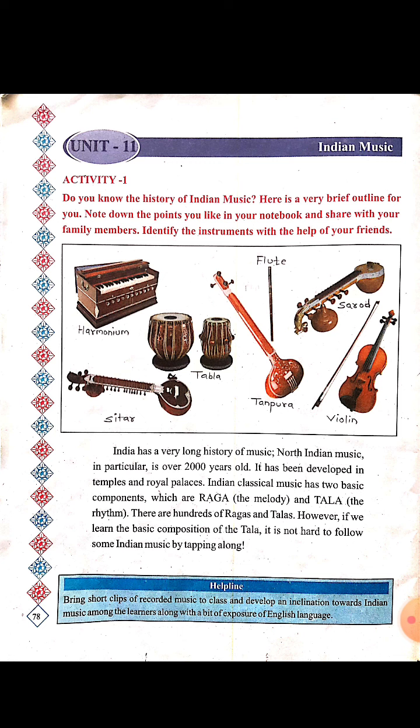Jo Indian classical music hai, iske two basic parts hain — jo ki hai rag, yani the melody, and tal, yani rhythm. There are hundreds of rags and tals. However, if we learn the basic composition of the tal, it is not hard to follow some Indian music by tapping along.